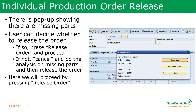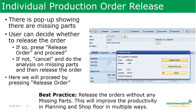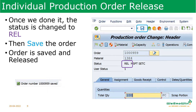For our discussion we are going to release the order. But the best practice is to release orders without any missing parts — a full kit order has to be released. This will give a lot of benefits to the processes, especially for planning and the shop floor. Bringing this practice into the system is very difficult, but once you bring this discipline, it gives a lot of benefits. Once we complete releasing, the status changes from CRTD to Released. Press the Save button. Now the order is saved, released manually and individually.